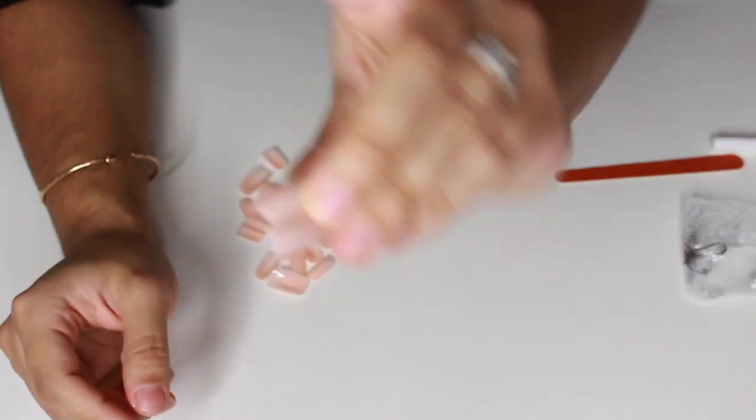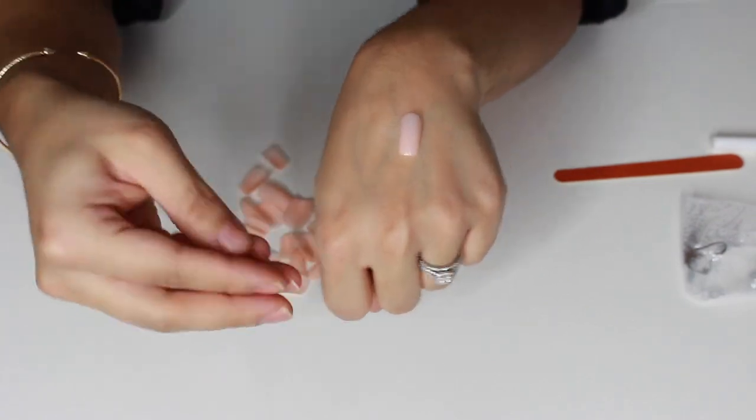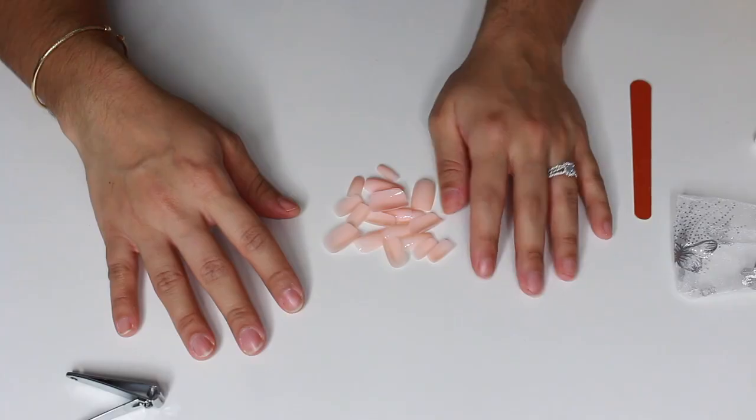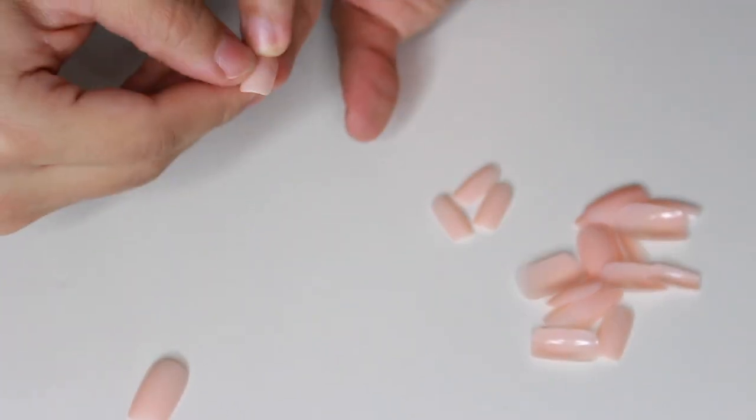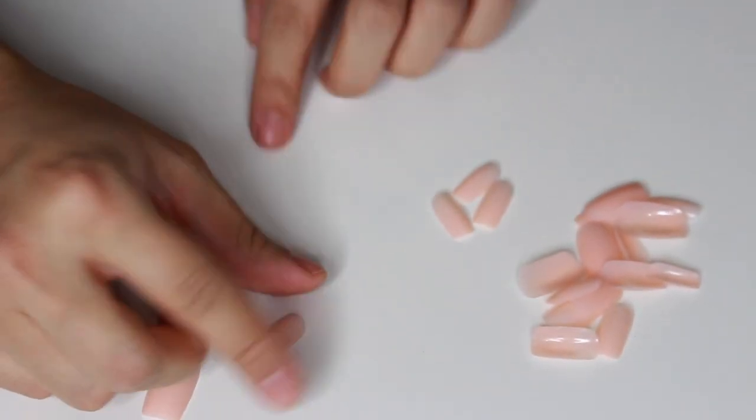They are these square nude nails. They have different styles and colors. First, you're going to take your nails and measure them all out and pick out your set from the 20 that they have.